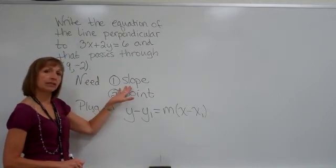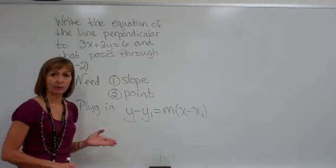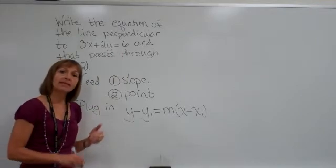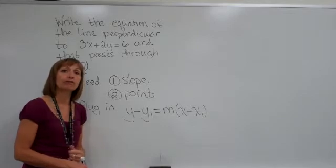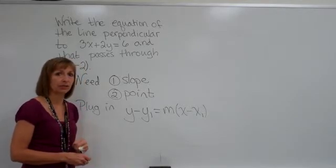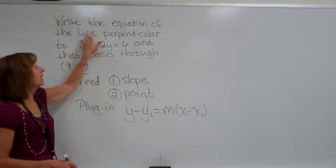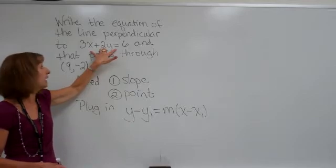First, when I look for the slope, I noticed that they didn't tell me exactly what the slope was, but they did give me information that would allow me to find the slope of my line. My line is supposed to be perpendicular to the line with this equation, 3x plus 2y is equal to 6.